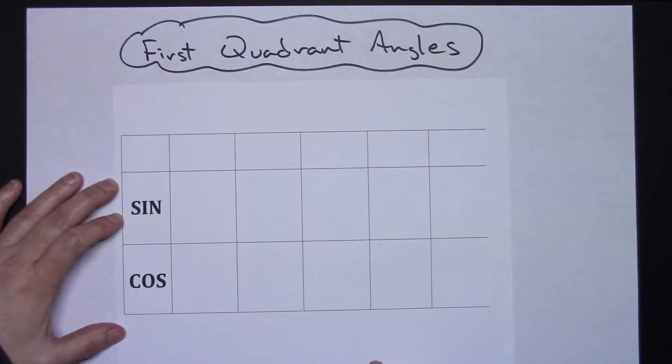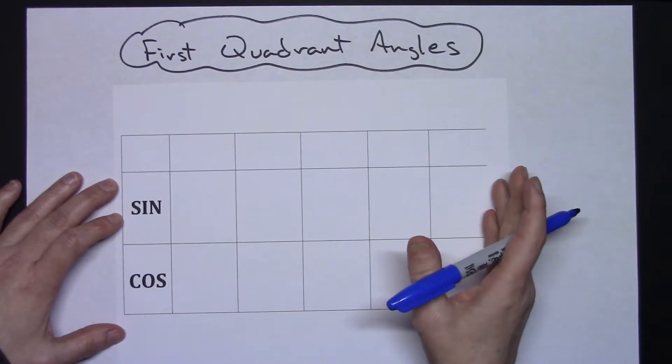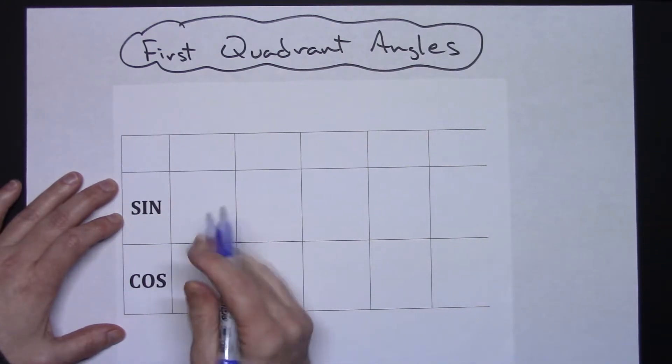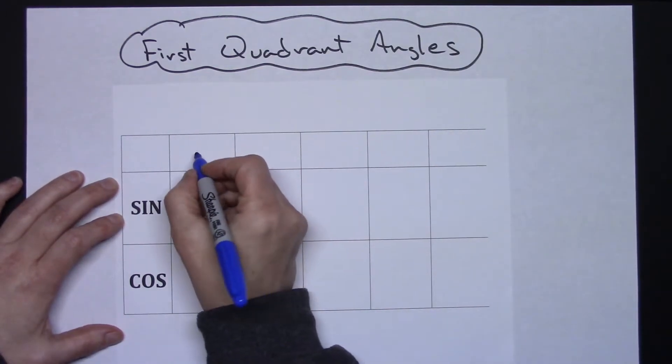So let's say you can draw a chart really quickly as soon as you're passed out a test. You need three rows and five columns. Sine goes on top, cosine goes on the bottom, and then your angles that are in the first quadrant go across the top.